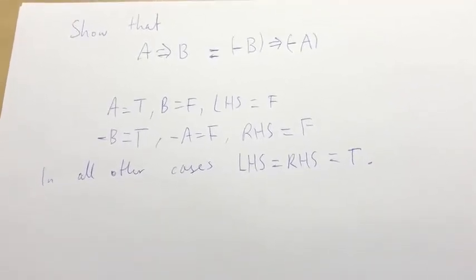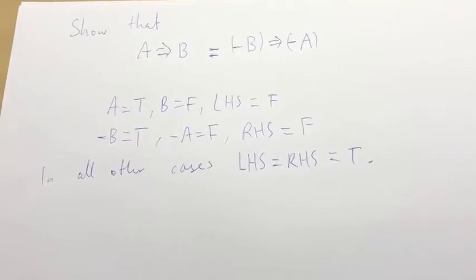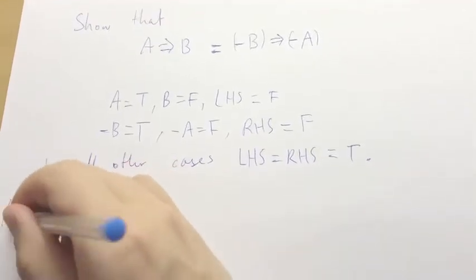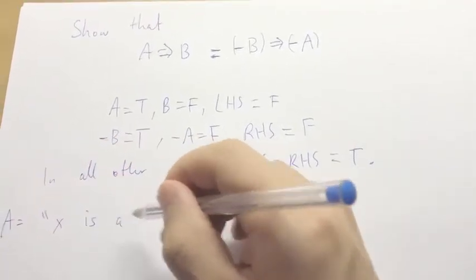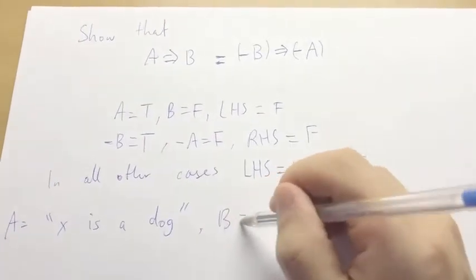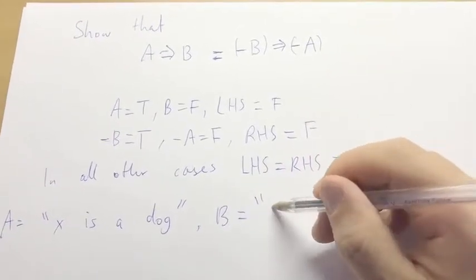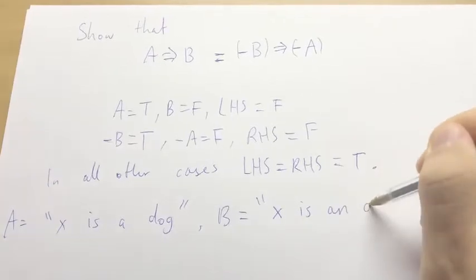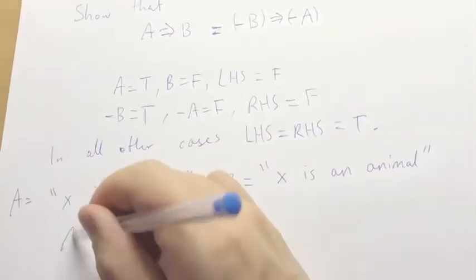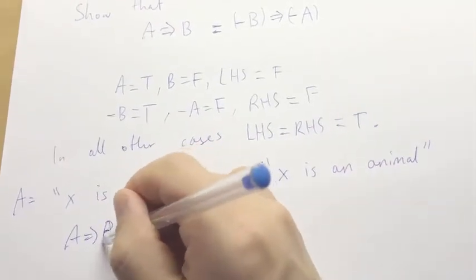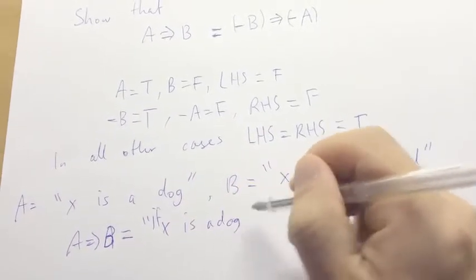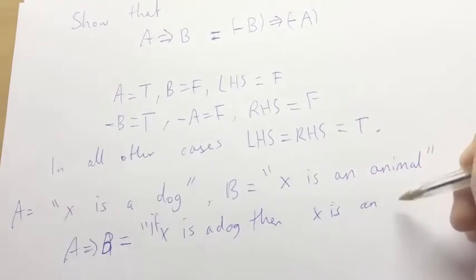But to get a better understanding of this, it might be better to say some statements. So like, A equals X is a dog. B is equal to X is an animal. It might be easier to digest this with a true statement. So then A implies B is equal to, If X is a dog, then X is an animal.